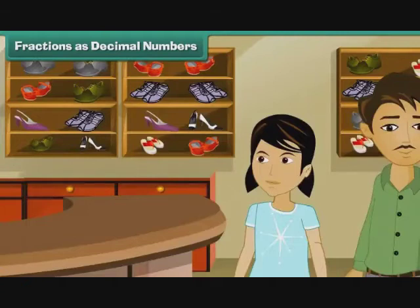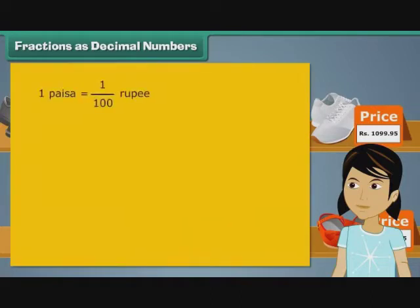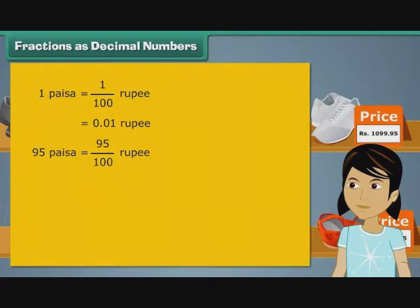Arpita went with her father to buy her school shoes. Prices of footwear in the store were expressed as decimal numbers. She wondered what the decimals in the prices meant. 100 paise make 1 rupee. In other words, 1 paise is 1 by 100th of a rupee. It can also be written as 0.01 rupee. Therefore, 95 paise form 95 by 100th of a rupee. We can express 95 paise as 0.95 rupee. Therefore, the decimals in the footwear stood for paise.